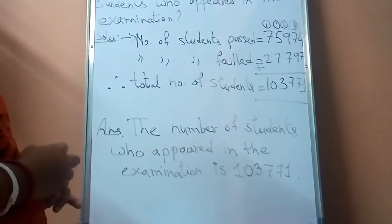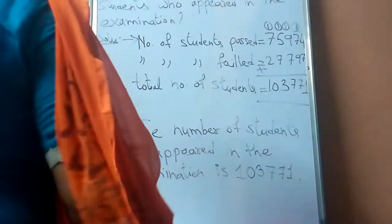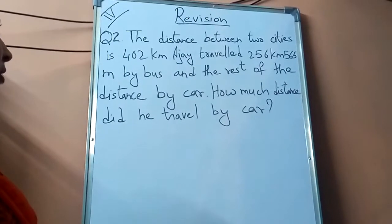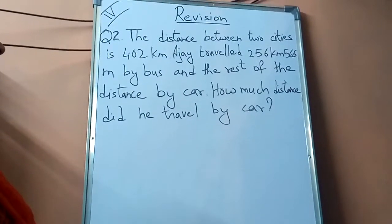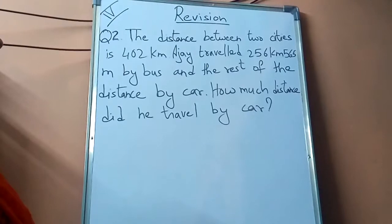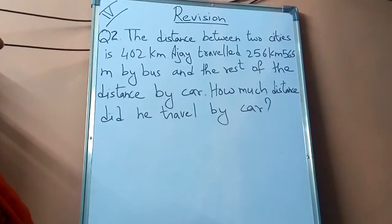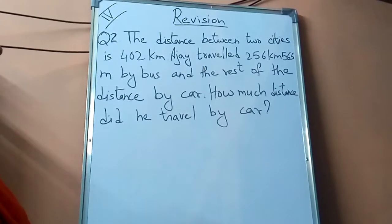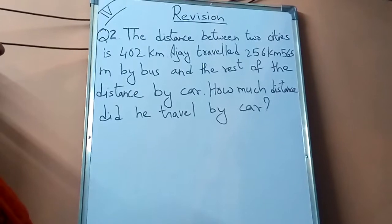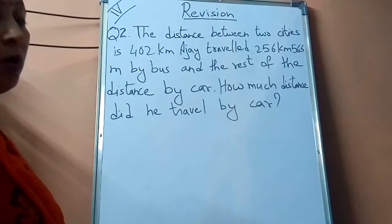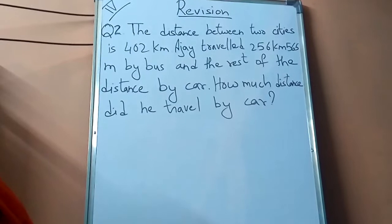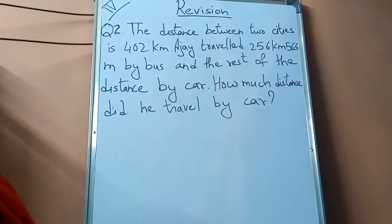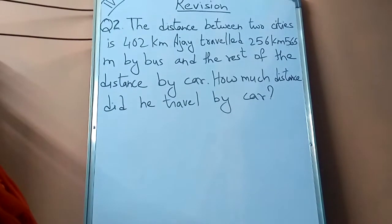Now one more question we will do. Come to question number two. The question is: the distance between two cities is 402 kilometers. Ajay travelled 256 kilometers and 565 meters by bus, and the rest of the distance by car. How much distance did he travel by car? The total distance between the two cities is given, that is 402 kilometers, and Ajay has travelled by bus and the rest of the distance he covered by car.